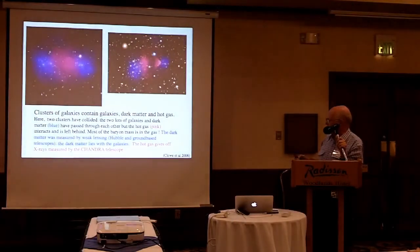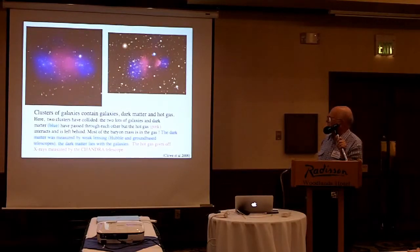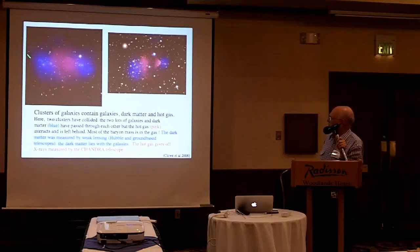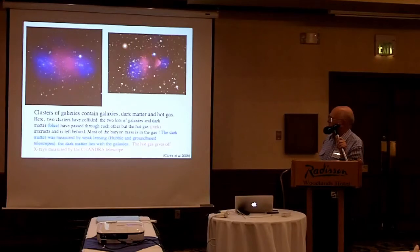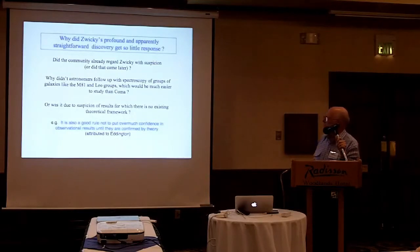Just to show some pictures: these are two examples of clusters which are moving — two clusters involved in each case, moving in the plane of the sky. What you can see in blue is the dark matter, associated with the galaxies, mapped out by weak lensing. In red you can see the hot gas, seen in X-rays and measured by the Chandra telescope. So you can really see how the dark matter distribution lies, and this shows what followed from Zwicky's work.